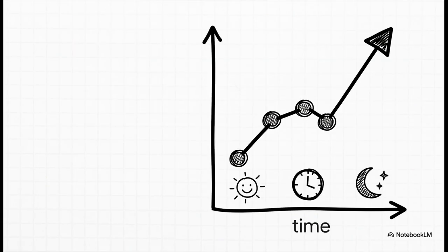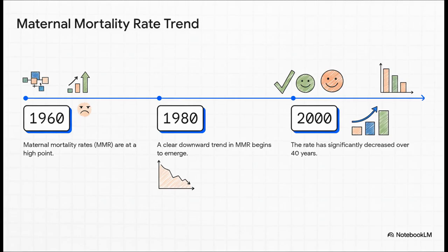But what if your numbers aren't just a snapshot? What if they tell a story that unfolds over weeks or months or even years? For that, you need a line graph. It is the ultimate storyteller for showing trends. And this is where a line graph becomes incredibly powerful. It can visualize decades of public health progress in a single, clear line, like the decline in maternal mortality rates. Each point connects to the next, creating a clear story of change, helping you see the real-world impact of health interventions over time.